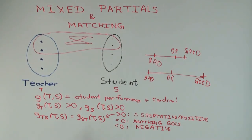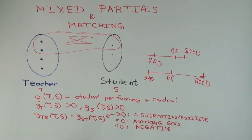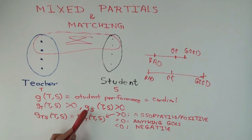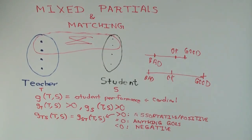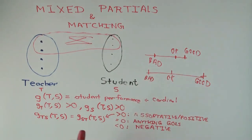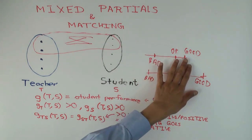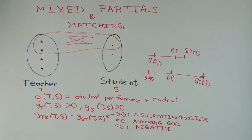The sign of the mixed partial really depends on the way you do your cardinal scaling. The sign of the first partials doesn't change under a monotone transformation — the fact that performance increases with teacher quality doesn't change. But the sign of the second partial, or the mixed partial, can change when you change the way you are scaling things, because how sensitive it is at different portions of the spectrum could affect that.